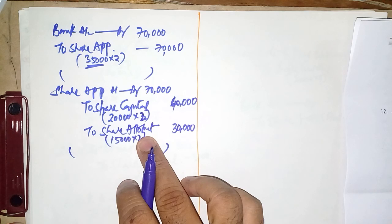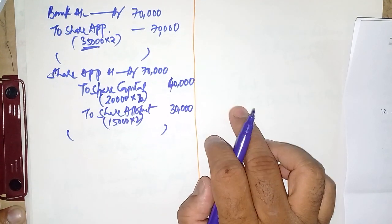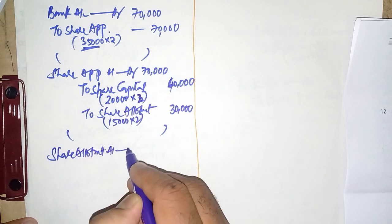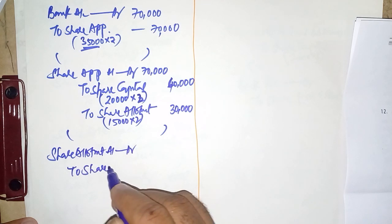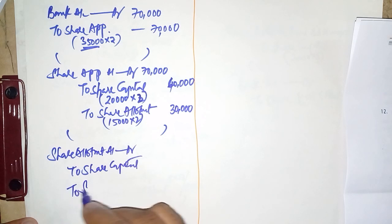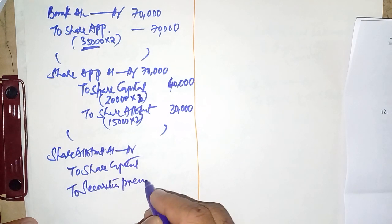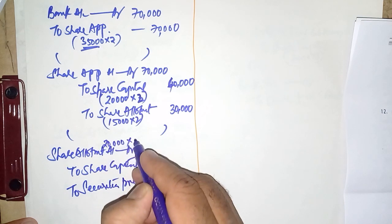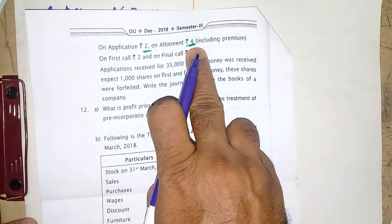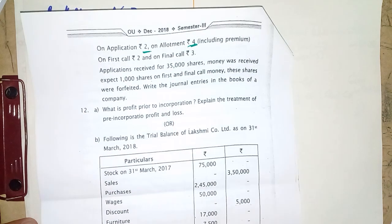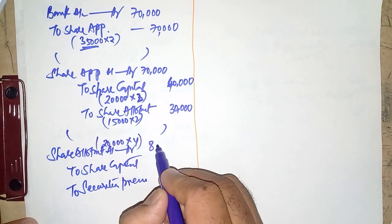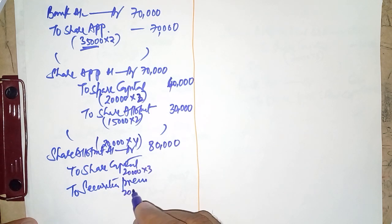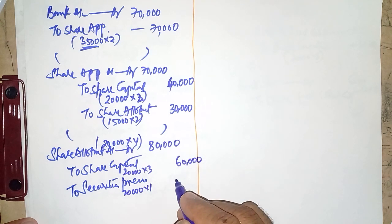Share allotment due entry: Share Allotment Account Dr. to Share Capital and to Securities Premium. On 20,000 shares at ₹4 on allotment (including ₹1 premium): total ₹80,000 due — ₹60,000 towards capital (20,000 × ₹3) and ₹20,000 towards premium (20,000 × ₹1).